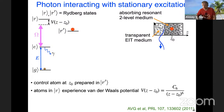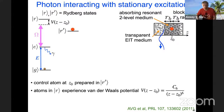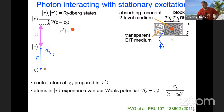Far away from the Z0 atom, this 1-over-R-to-the-6 is negligible — essentially zero — and we get our favorite transparent EIT medium. However, next to the Z0 atom this shift is large, and it can be so large that capital omega becomes negligible. The state R is shifted away to infinity, so near the Z0 atom we effectively have a resonant absorbing two-level medium. When the photon goes in, it first goes through the transparent EIT medium, but then it gets to this absorbing two-level medium and gets scattered. The R prime excitation caused the scattering of the incoming photon in an otherwise transparent EIT medium.